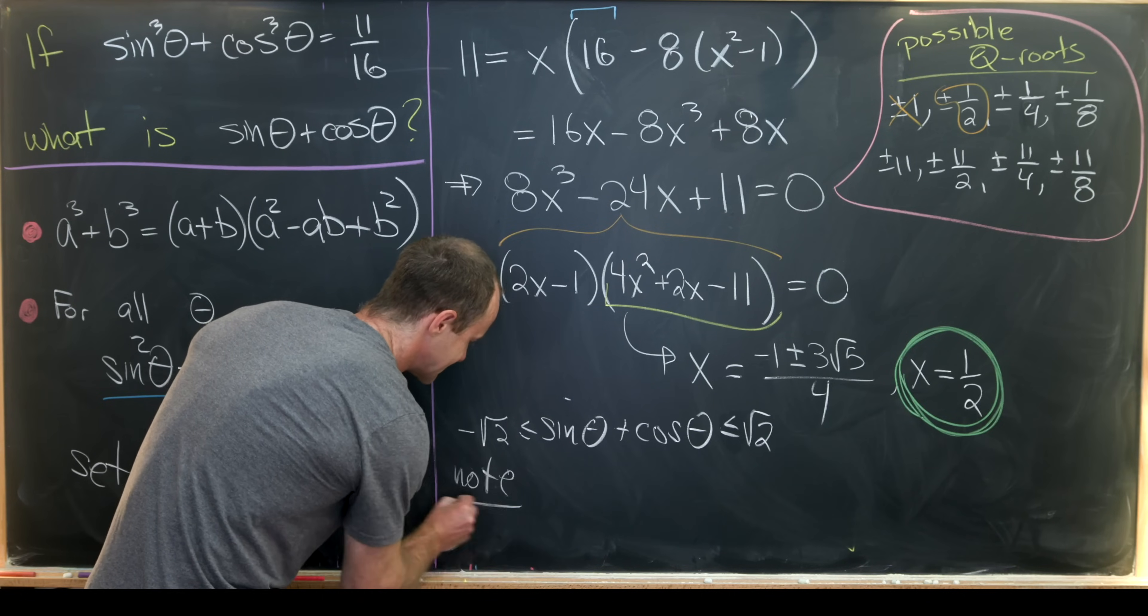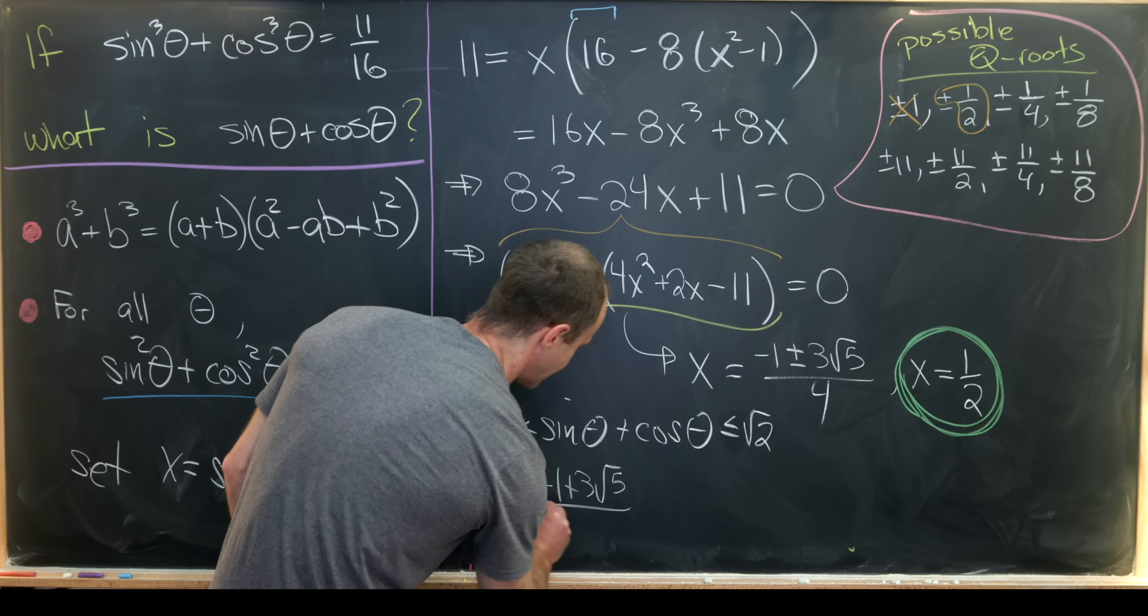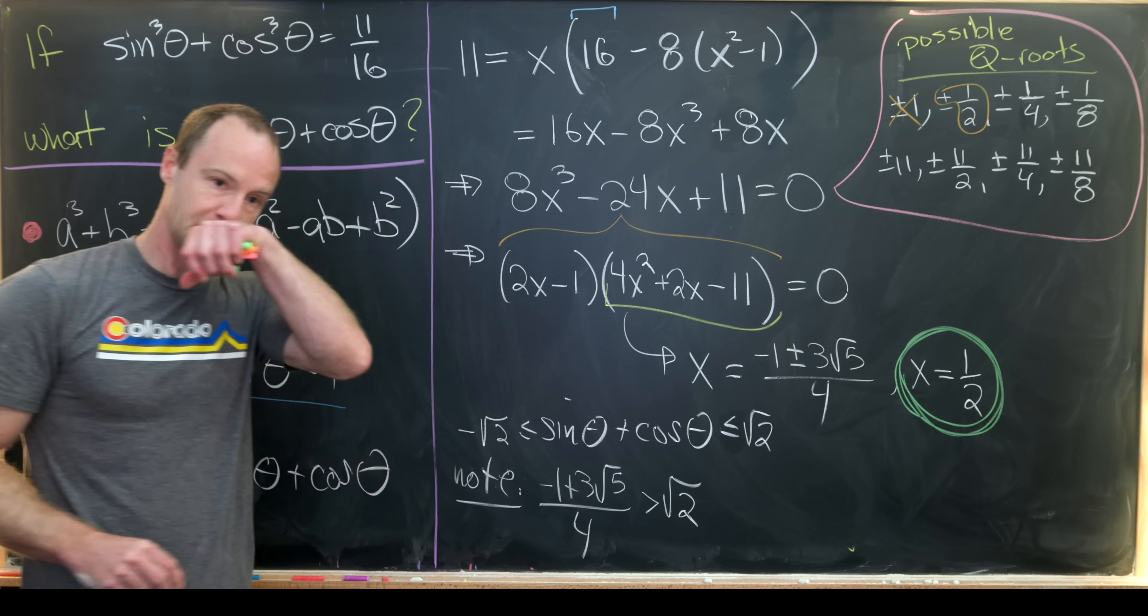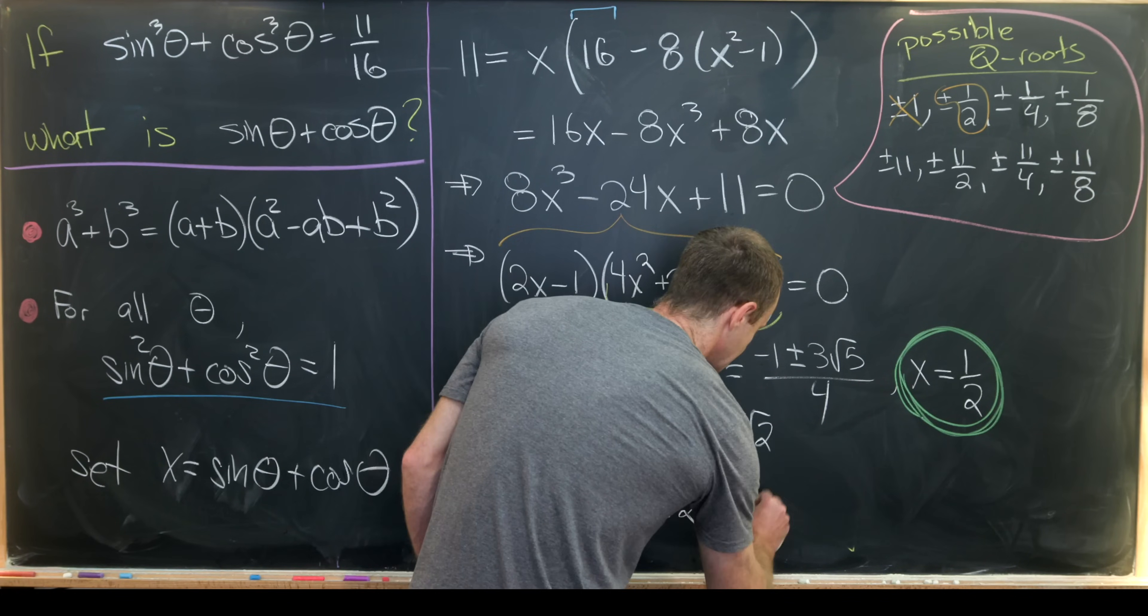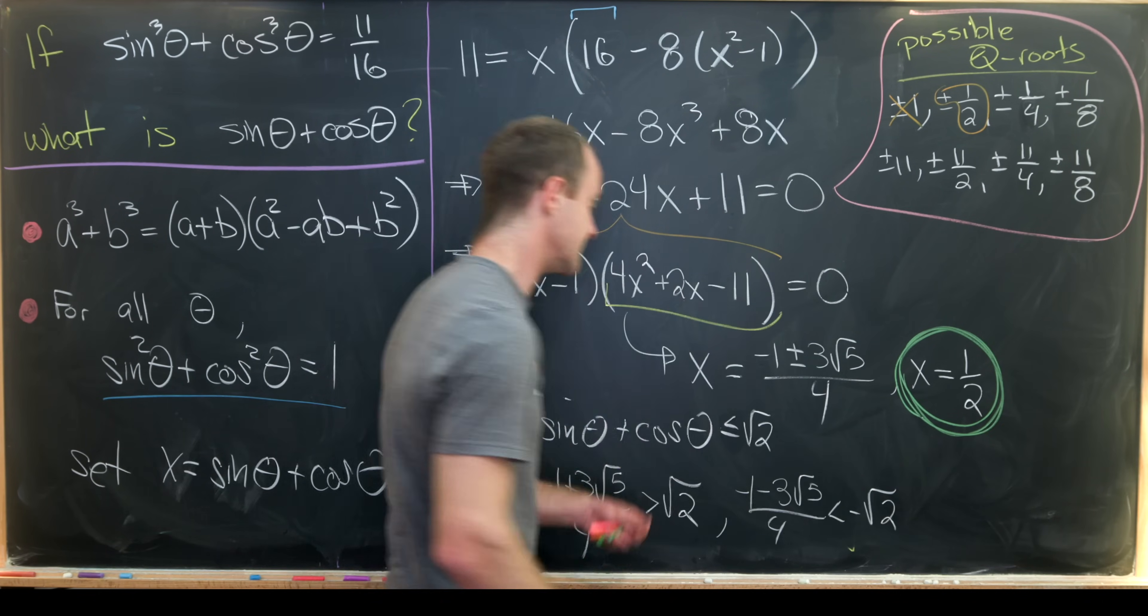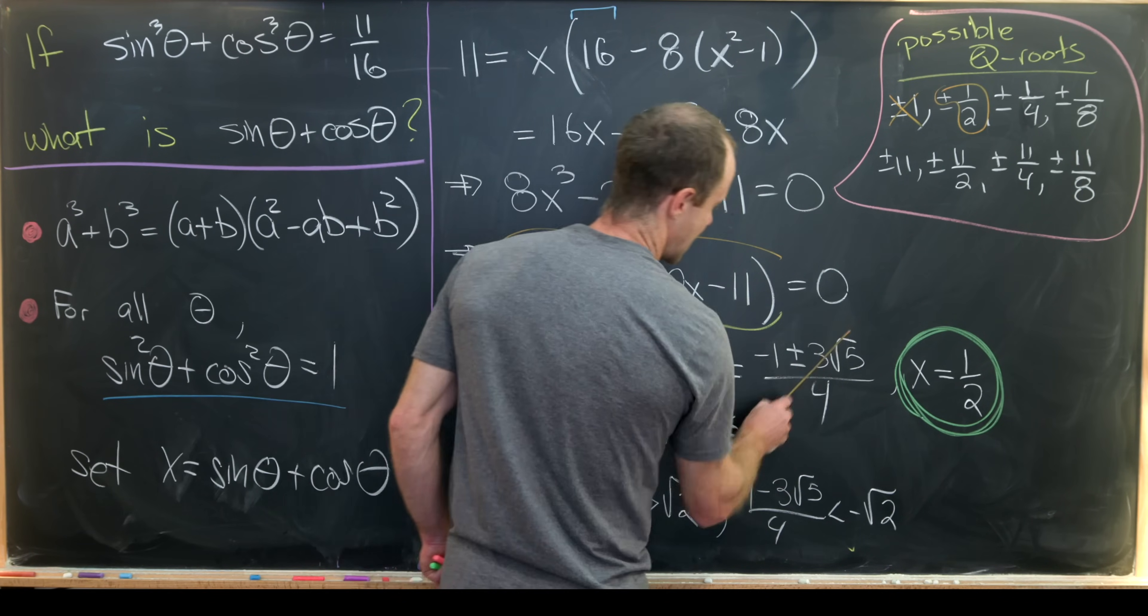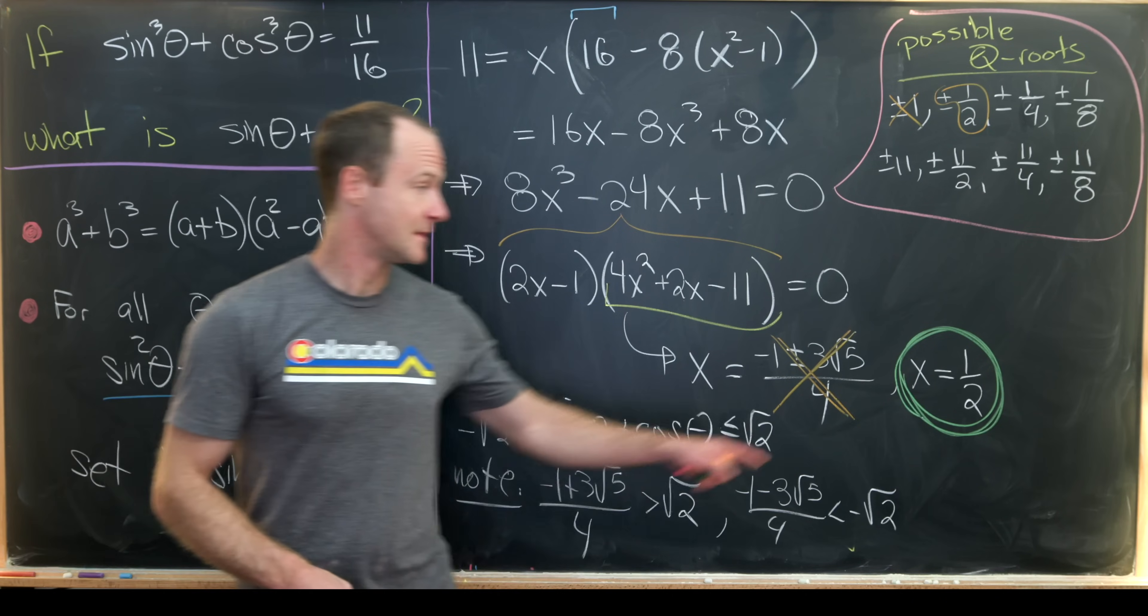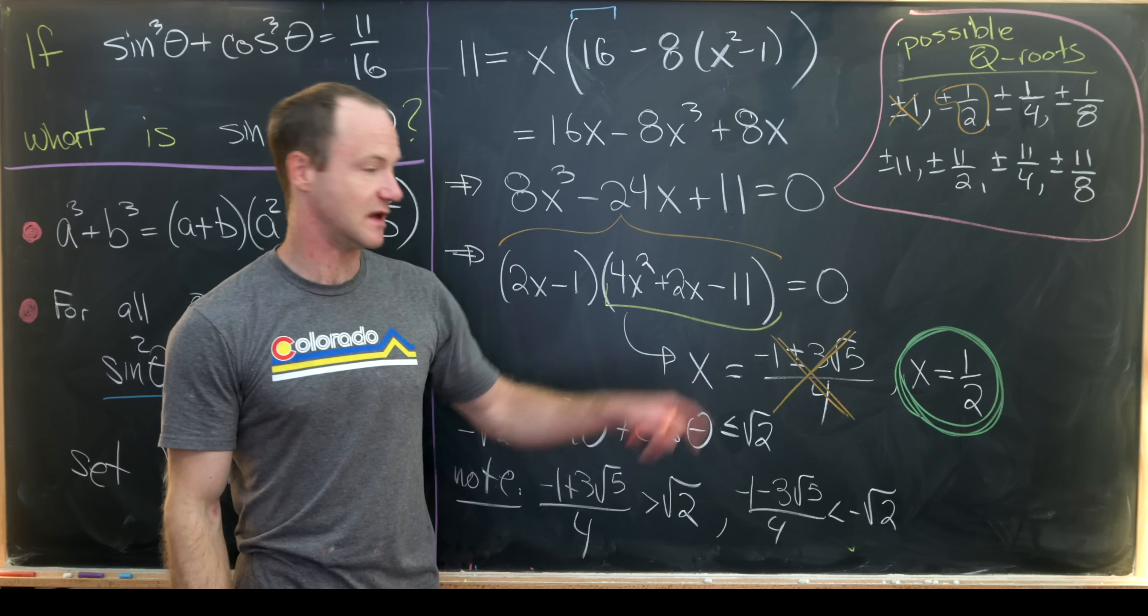But it turns out that these numbers are outside of this range. So let's maybe put that here as a note. Negative 1 plus 3 times root 5 over 4 is in fact bigger than the square root of 2, so that makes that impossible to be a solution. And then negative 1 minus 3 times root 5 over 4 is less than negative root 2, so that's impossible for a solution as well. So that means we can disregard these as possibilities for our particular situation. And we end up with a value of sine theta plus cosine theta being one half.